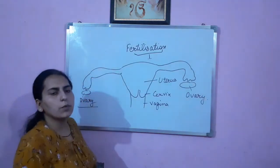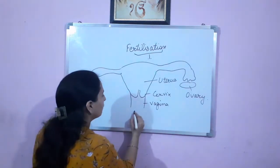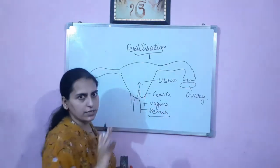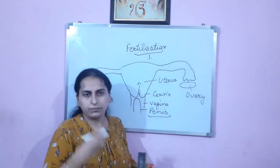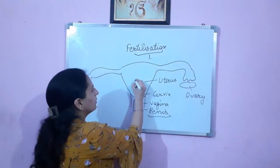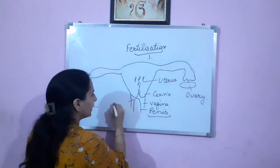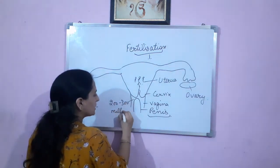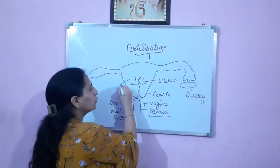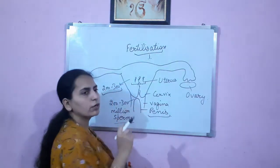What happens in the process of fertilization? By the process of copulation there will be insemination. In the vagina, the penis will enter and it will ejaculate the sperm. The sperm will move into the uterus. Due to the acidic environment of the vagina, many sperms will get killed. 200 to 300 million sperms have been ejaculated, but in the uterus only 200 to 300 will be able to reach.